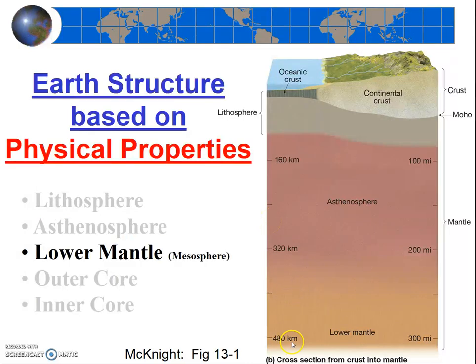Moving deeper down, we have the lower mantle. Some books call this layer the mesosphere, which I like because 'meso' means middle and it's right in the middle of these five layers. However, it can be confusing because the atmosphere also has a layer called the mesosphere. The lower mantle is solid—these rocks are much stronger than the asthenosphere, even though it's still peridotite.